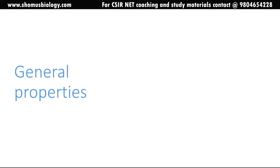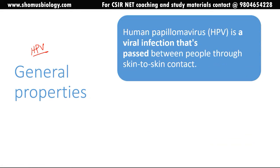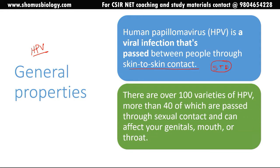The first thing is about general properties. When you see HPV — human papilloma virus — the first thing that comes to mind is that it's a contagious infection, generally a viral infection passed between people through skin-to-skin contact and also via sexually transmitted interactions, or STD. There are over 100 variants of HPV, more than 40 of which pass through sexual contact and can affect genitals, mouth, or throat.